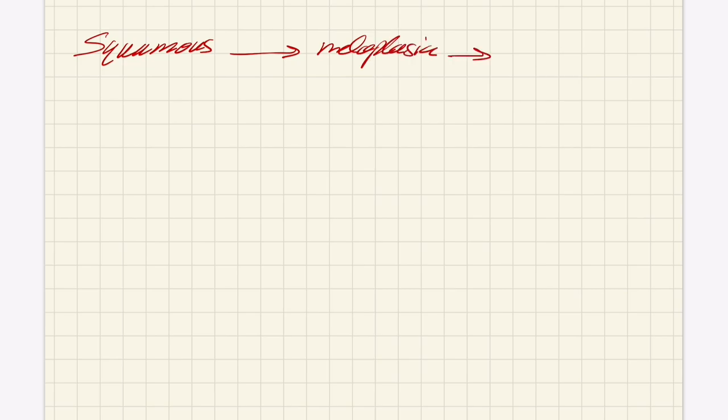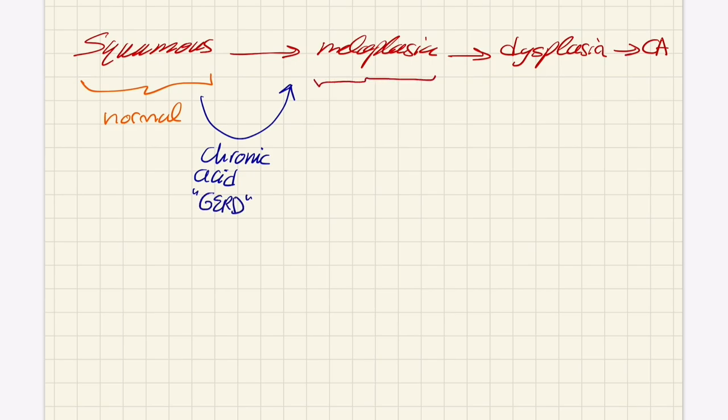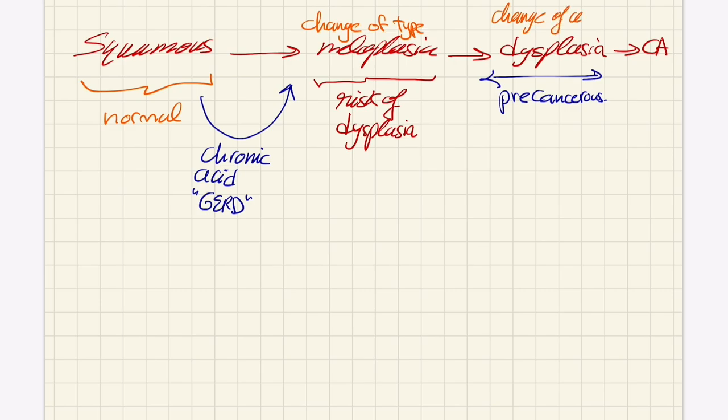Just a quick review: it is squamous cell that has metaplasia - change of the type of cell into intestinal cell, which carries the risk of dysplasia. Dysplasia is a bad version of the cell itself - the cell changes to a bad version of itself. This is pre-cancerous. Dysplasia will turn into cancer if not treated. Always remember to screen for Barrett's in GERD patients using the criteria: symptoms for more than five years, age more than 50, males, white, central obesity, smoking history, or family history of esophageal cancer.